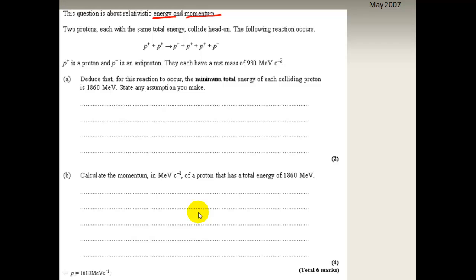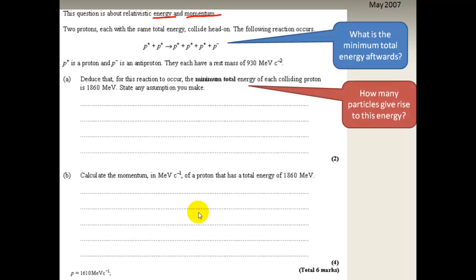Otherwise, I can give you a bit of help. The total minimum, the minimum total energy afterwards is the sum of those four, so it would be four times 930. And that's produced by two protons. So if you have four times 930 and you divide it by two, that's the amount of energy that you need to start with.